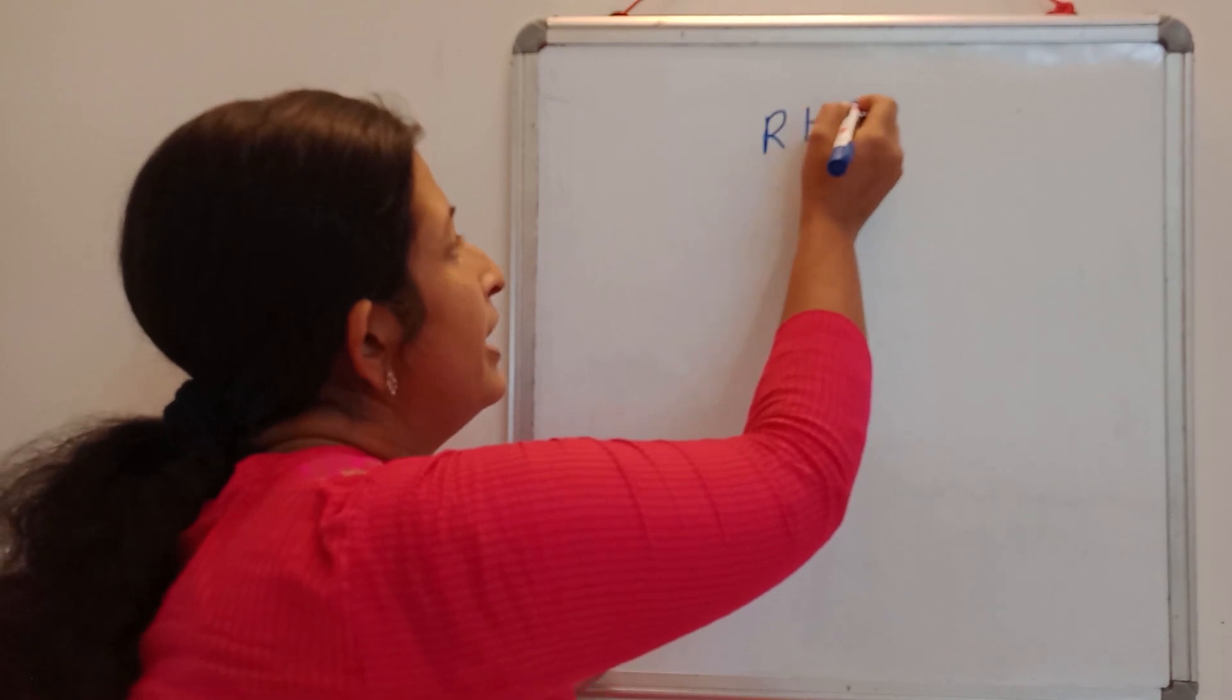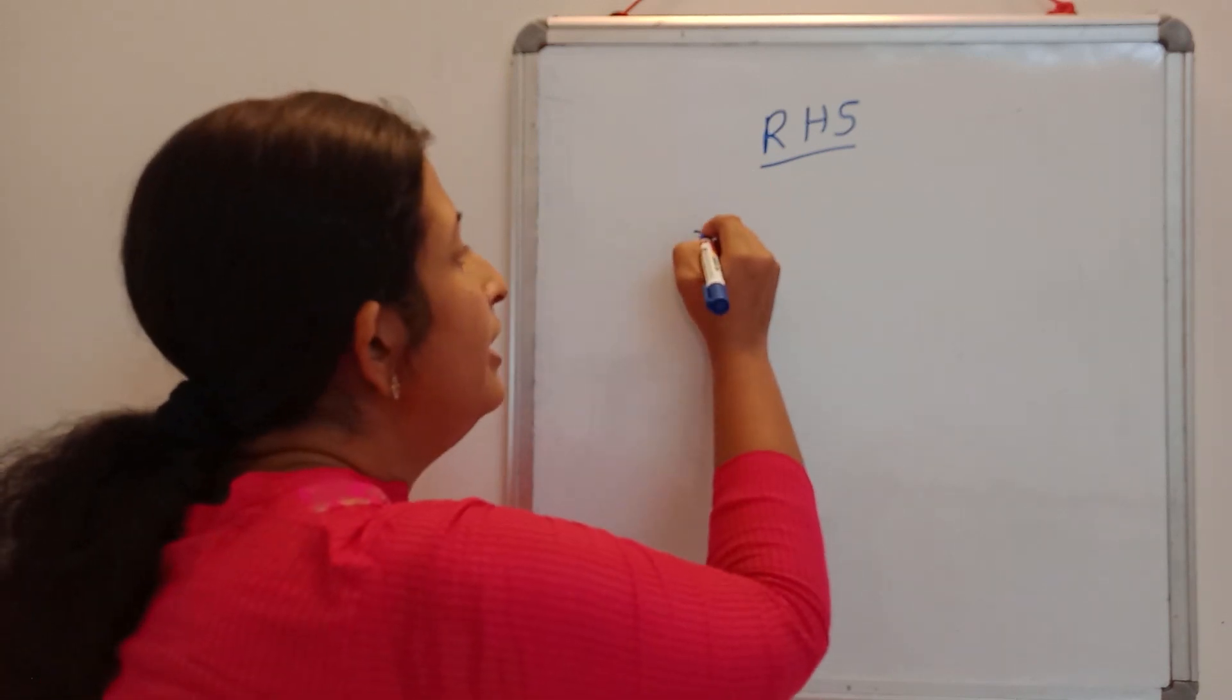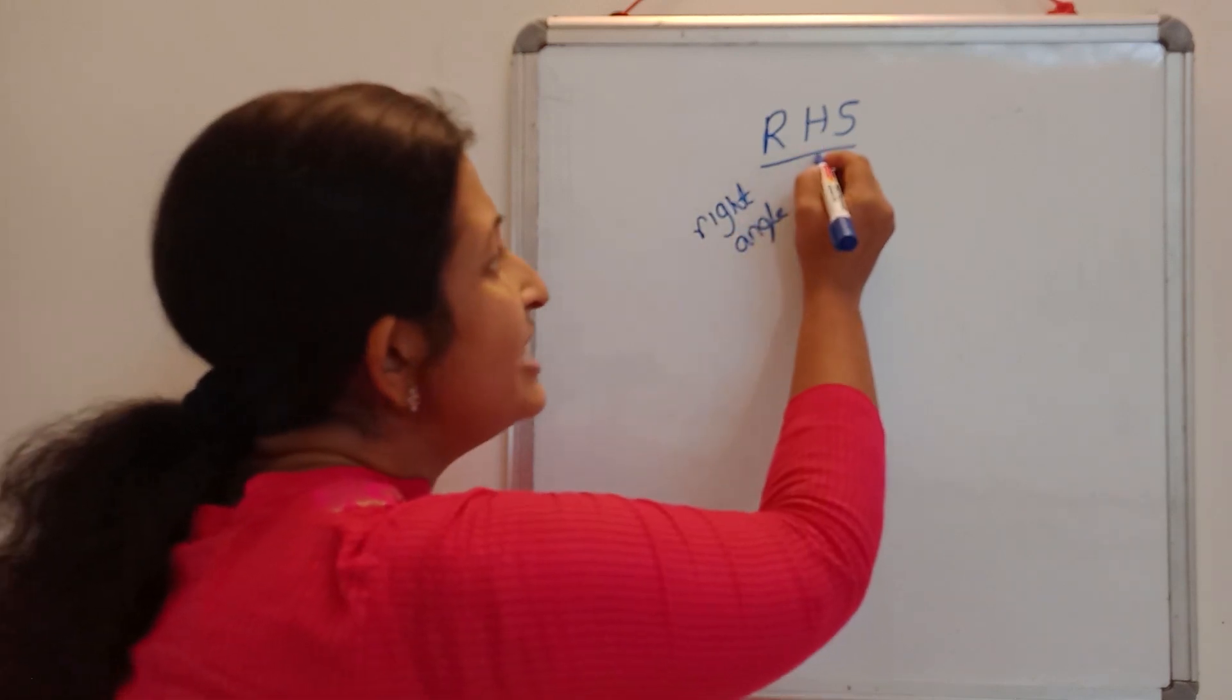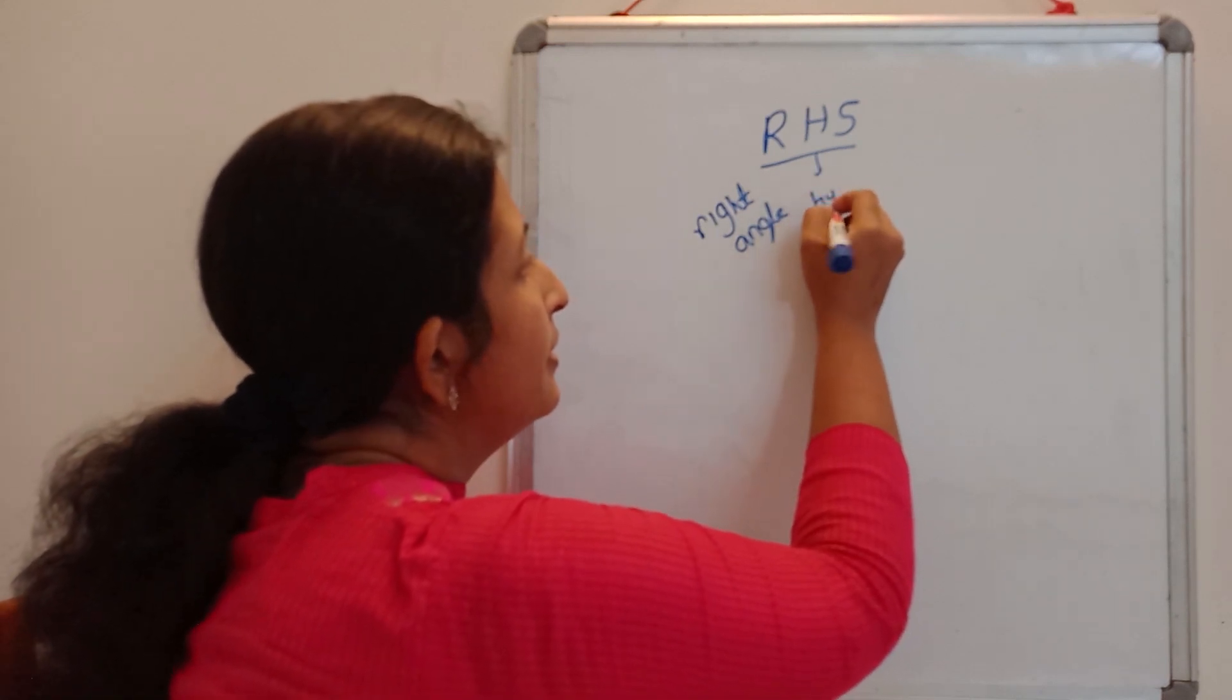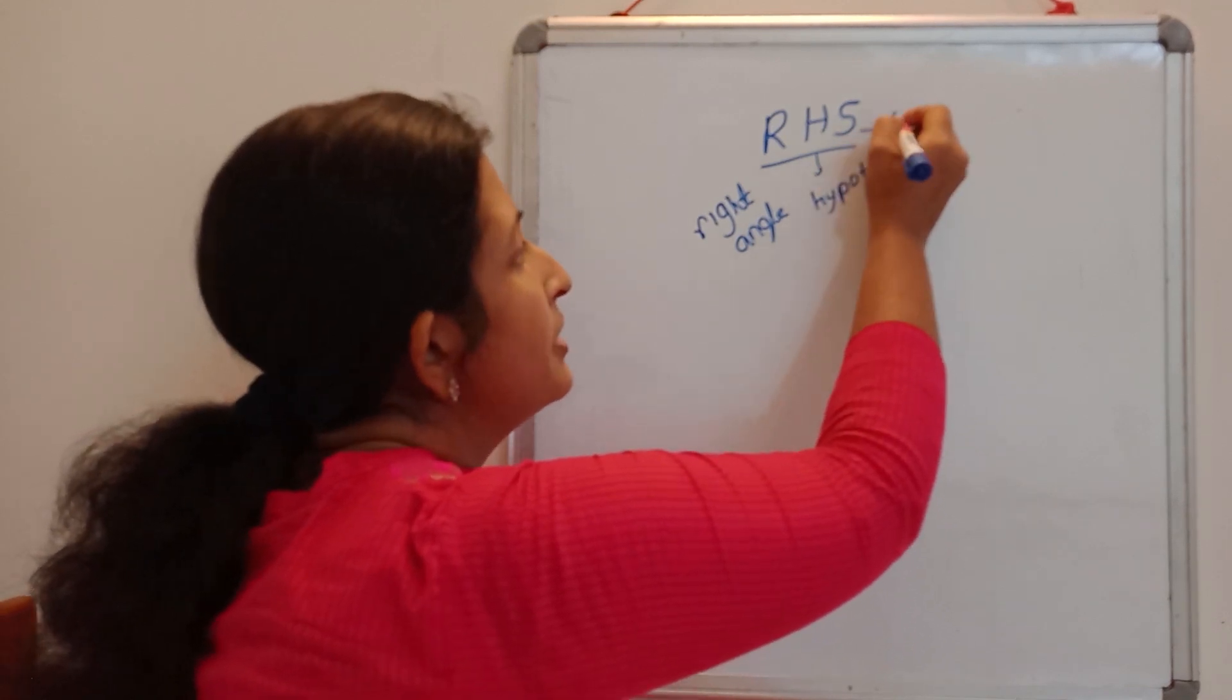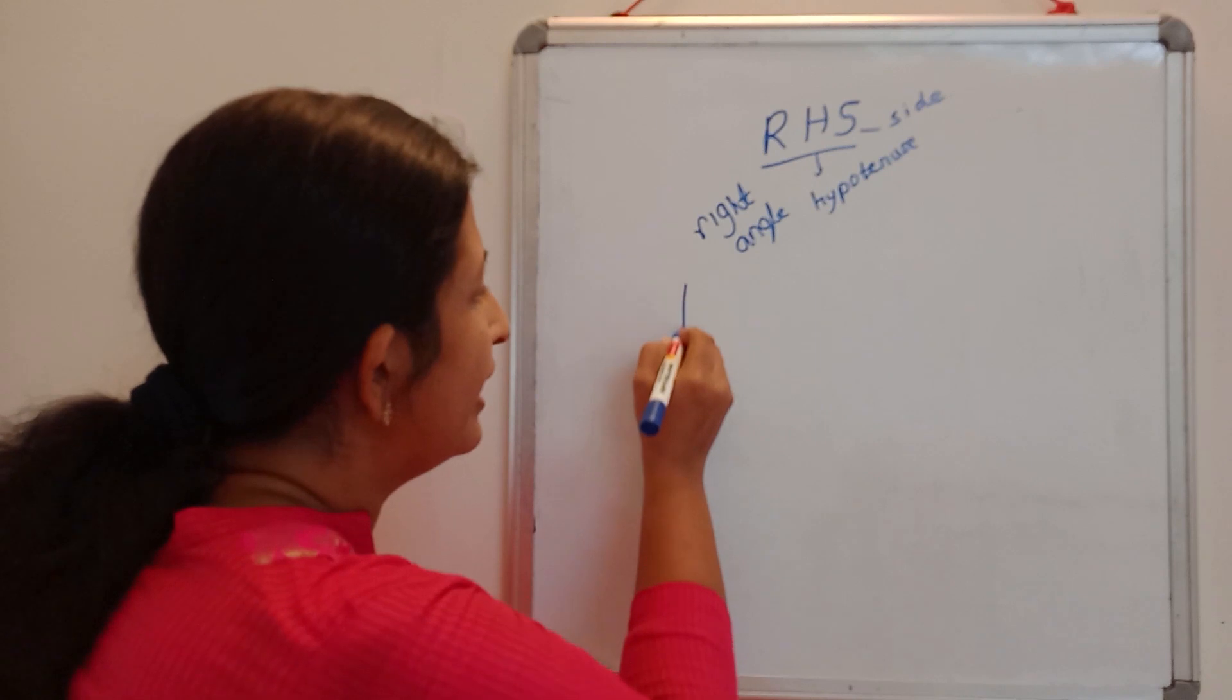RHS. What does this R indicate? R indicates right-angled. And H denotes hypotenuse. And this S denotes side.